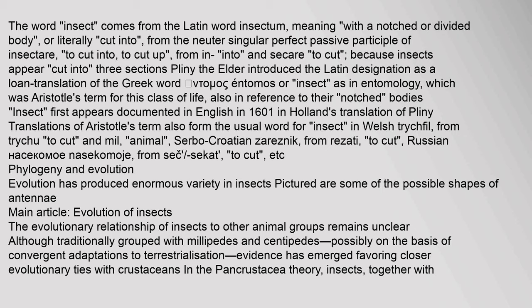Evolution has produced enormous variety in insects. The evolutionary relationship of insects to other animal groups remains unclear. Although traditionally grouped with millipedes and centipedes, possibly on the basis of convergent adaptations to terrestrialization, evidence has emerged favoring closer evolutionary ties with crustaceans in the pancrustacea theory.